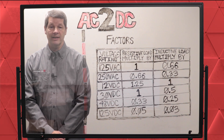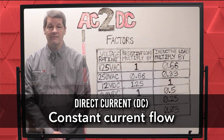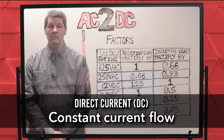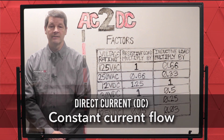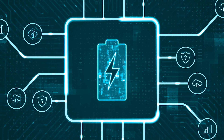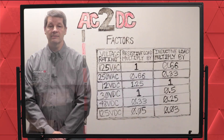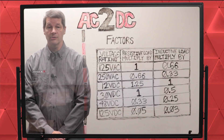First, what is DC or direct current? Direct current means you have a constant current flow. All batteries utilize direct current. When hooked up to a circuit, it's giving you a constant voltage at the source location, so the current is also constant.